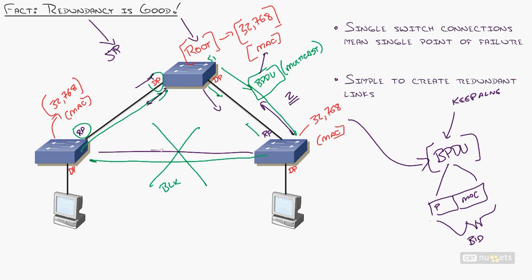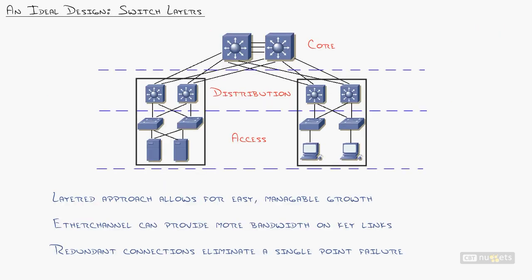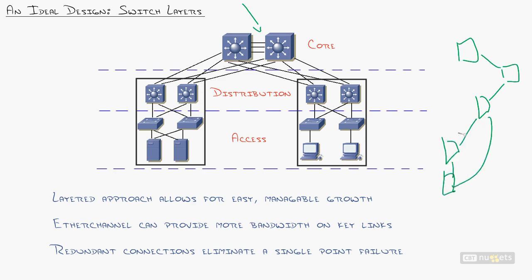A blocked port is disabled until spanning tree notices a link go down, then it unblocks. It seems simple — so why did I struggle 14 years ago? Because our networks don't look like a triangle with three switches. Real networks look much messier: connected here, back here, that one, this one, redundancy added everywhere, ether channels, fiber — and then you're scratching your head asking where the root bridge is and which links get blocked.